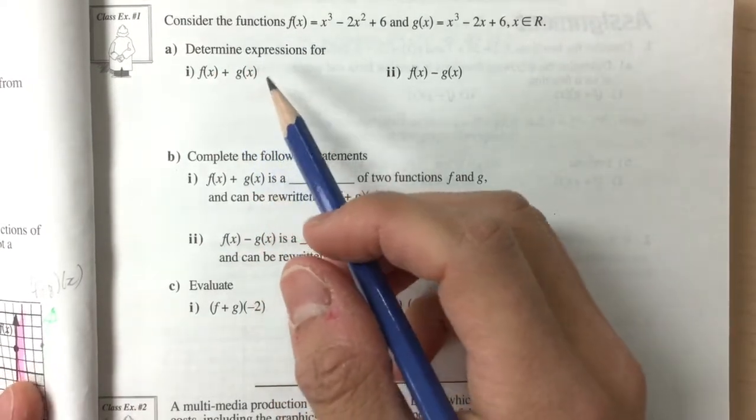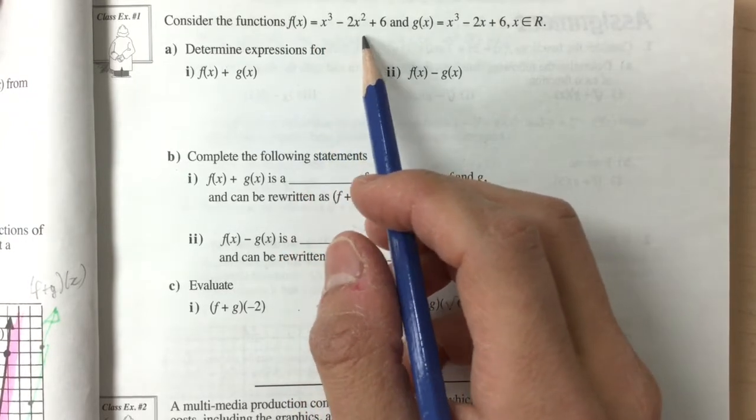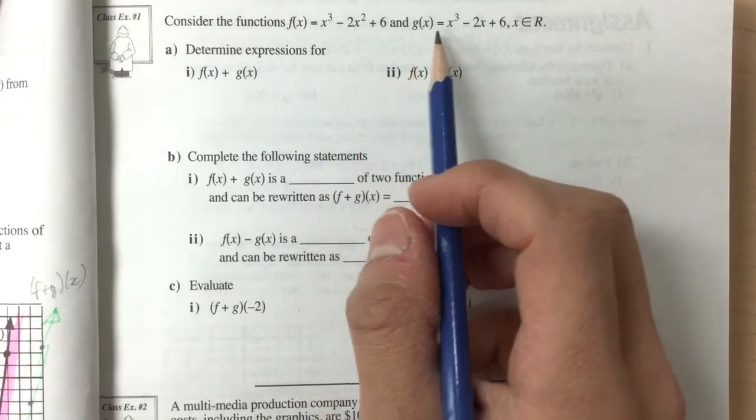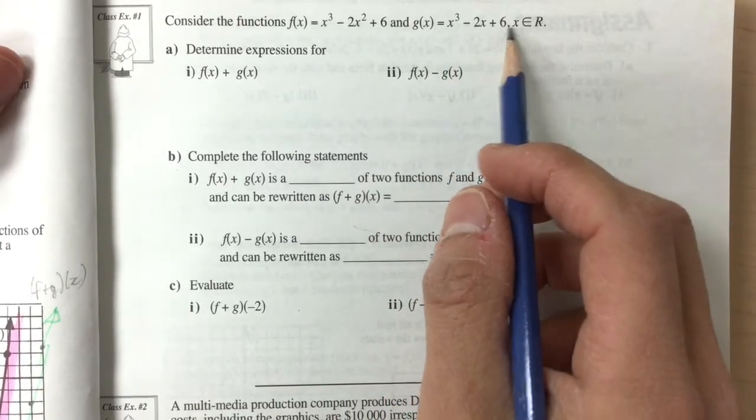Now, with class example number 1, we're going to look at the functions f of x is equal to x cubed minus 2x squared plus 6, and g of x is equal to x cubed minus 2x plus 6, such that x is an element of real numbers.